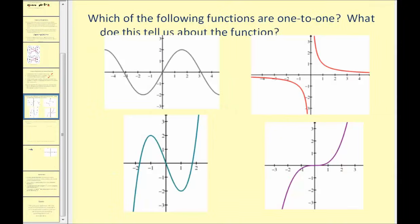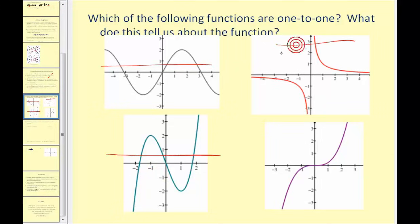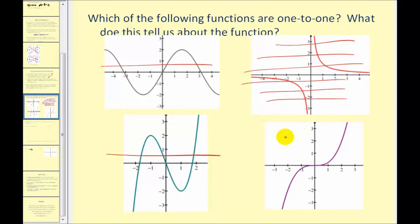Let's look at four functions and determine which are one-to-one using the horizontal line test. This first function quickly fails the horizontal line test, so it's not one-to-one. This one obviously fails as well. The two on the right pass — a horizontal line will never intersect those graphs in more than one point. So the two on the right are one-to-one functions and therefore have inverse functions, while the two on the left do not.